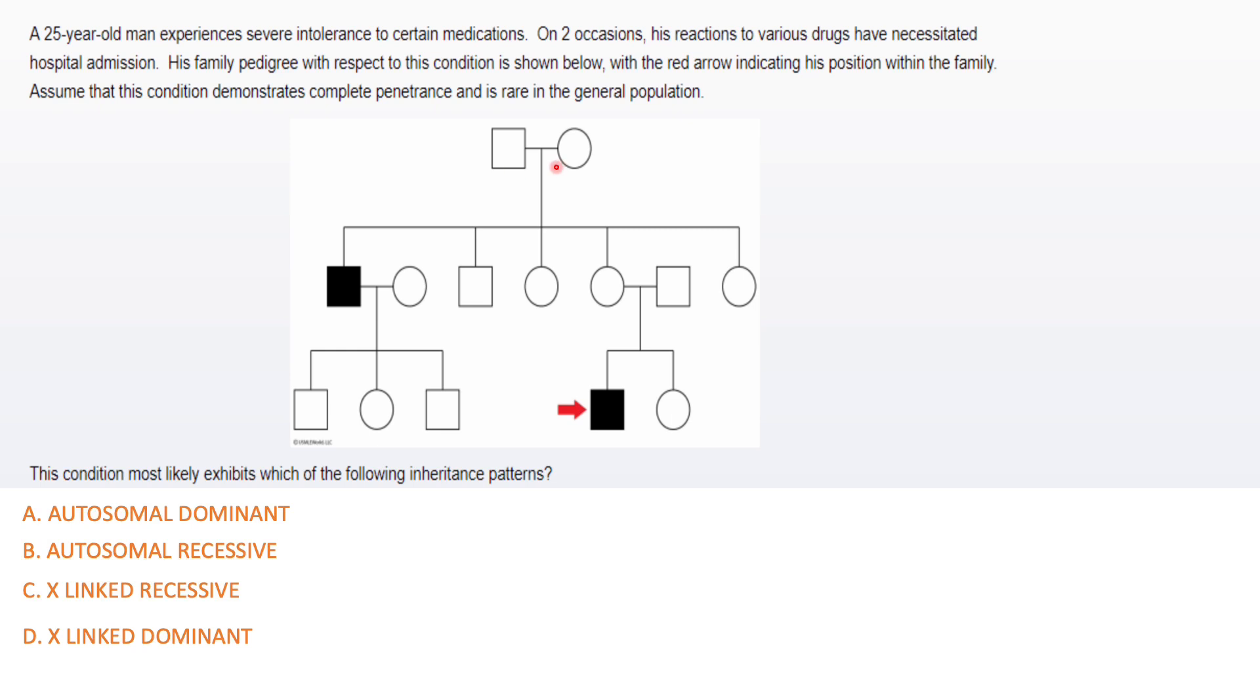Use my algorithm. Number one, are the parents affected or are they free? They're free, then this is recessive. Now I need to figure out, is it X-linked recessive or is it autosomal recessive? I've already ruled out two answer choices here. Now I'm narrowing it down to recessive options. Look at the offspring: only males are affected, then it's X-linked recessive. That's it. I really don't need to go through this whole thing. It will cut your question time very short.